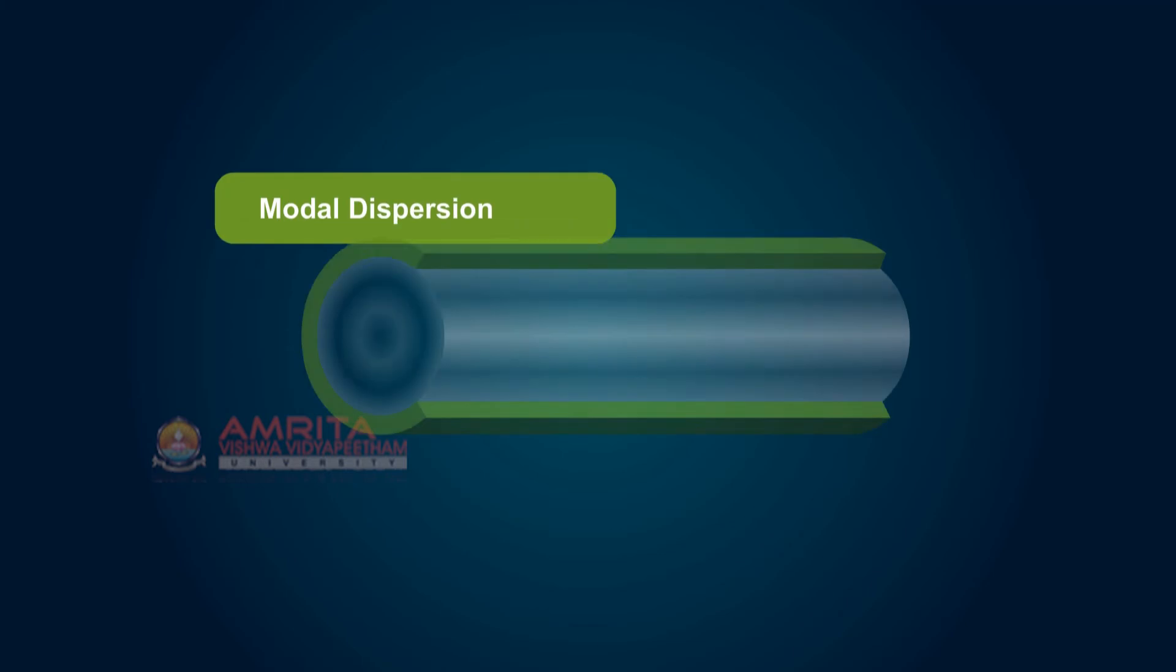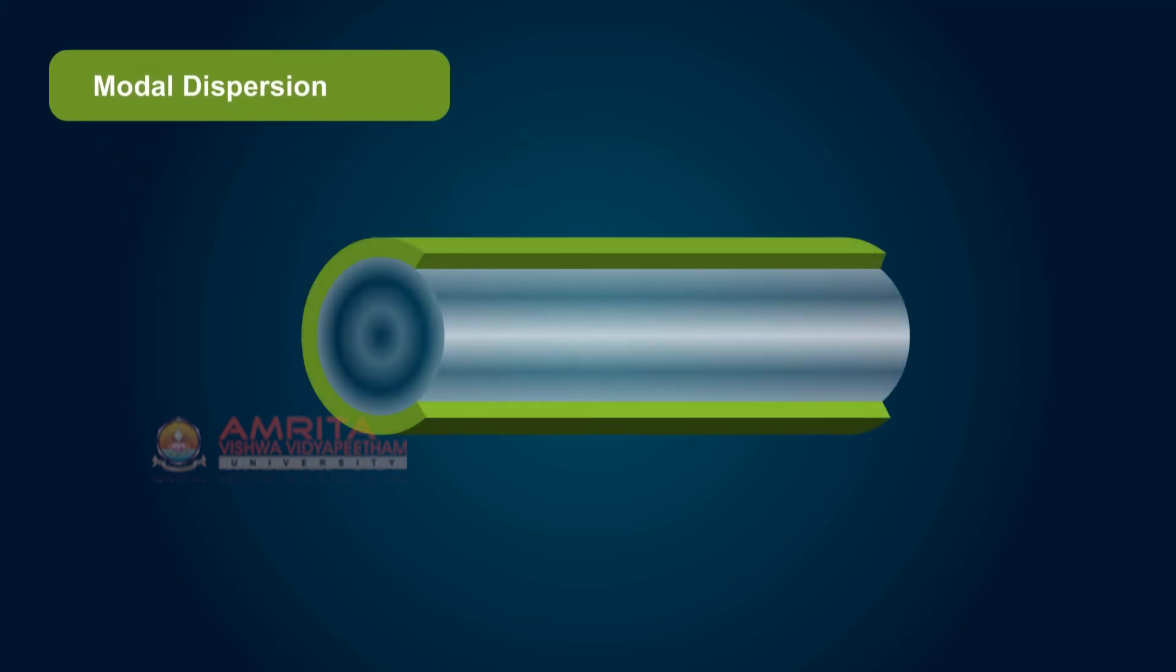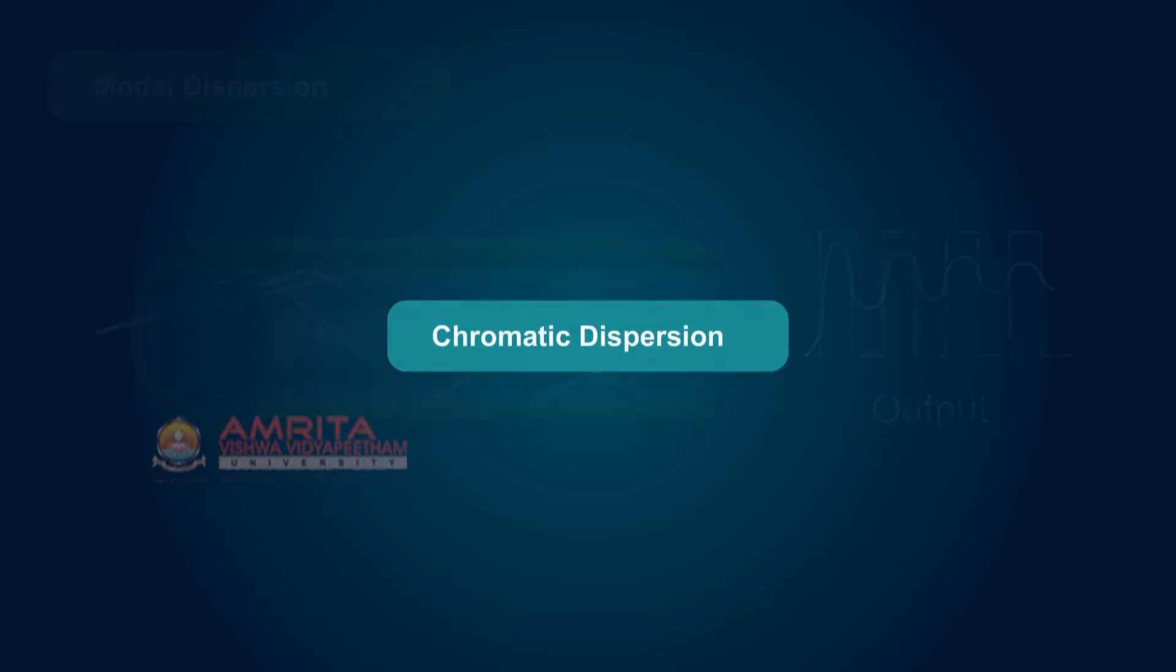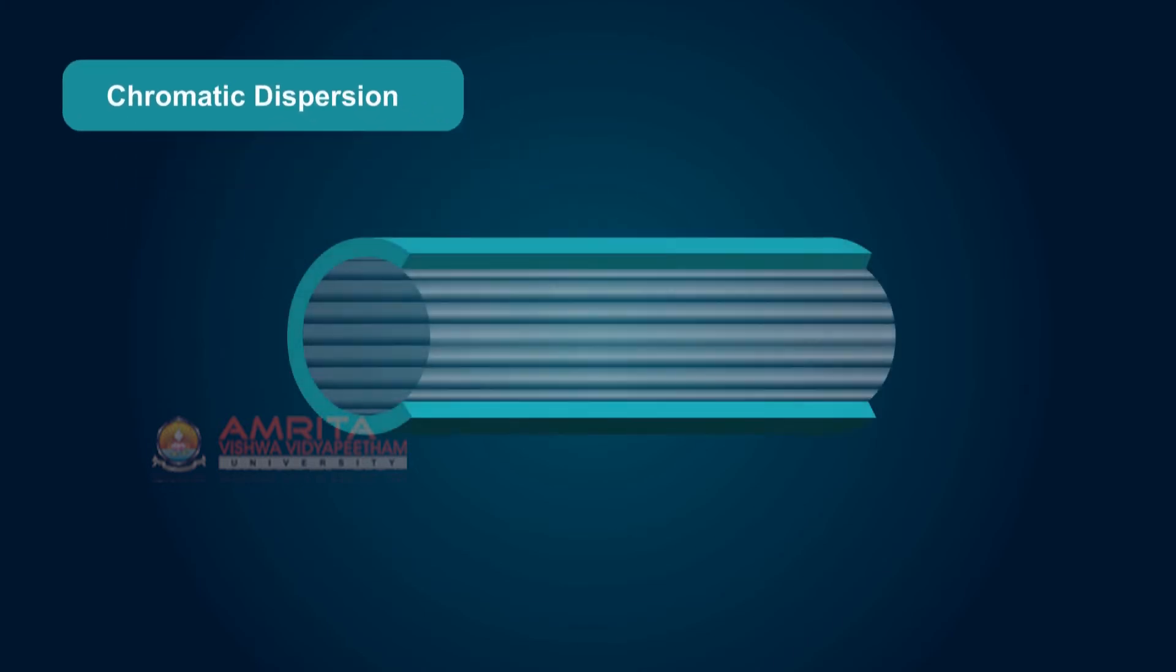Modal Dispersion: Modal Dispersion is a distortion mechanism occurring in multi-mode fibers in which the signal is spread in time because the propagation velocity of the optical signal is not the same for all modes.